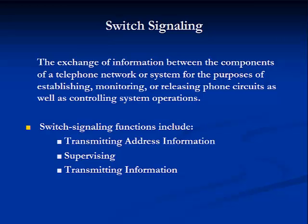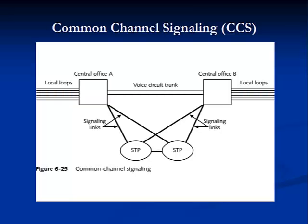Switch signaling is the exchange of information between the components of a telephone network or system for the purposes of establishing, monitoring, or releasing phone circuits as well as controlling system operations. Switch signaling functions include transmitting address information, supervising and transmitting information. Here is an illustration of the Common Channel System, or CCS, developed by AT&T in the 1970s to supervise and control traffic over trunk lines between central offices. Most modern networks use Signal System Number 7, or SS7, which alerts, addresses, supervises, and transmits information over digital networks.